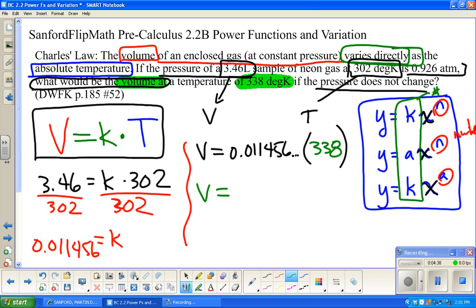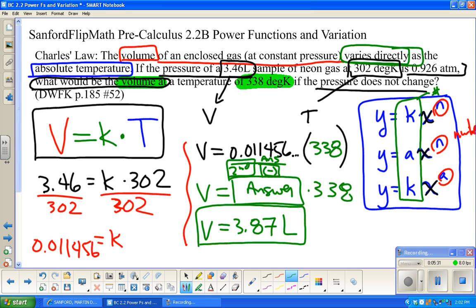Volume equals .011 times the new temperature, which is 338. I'm not going to use .011, I'm going to use what my calculator thinks is the last answer. You can grab that by hitting second and then answer, or just hit times and it'll take the last answer times 338. Get in the habit of not rounding. You don't want to round until the very end. So, 3.87 liters.